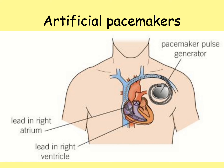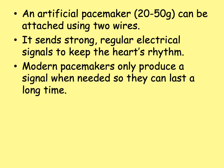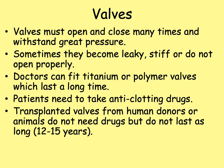If the heart beats too slowly, the person does not get enough oxygen; if it beats too fast, it cannot pump properly. An artificial pacemaker weighs between 20 and 50 grams. It can be attached using two wires and sends strong, regular electrical signals to keep the heart's rhythm. Modern pacemakers only produce a signal when needed, so they can last a long time.